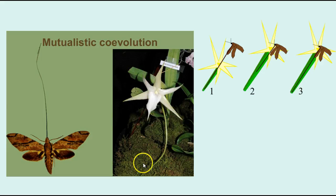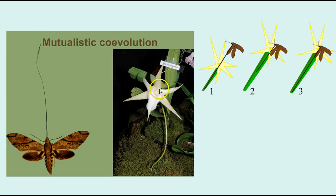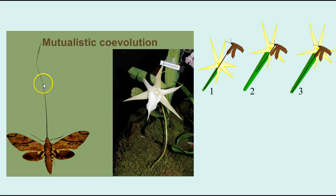Coevolution is when two species adapt to each other over time. Here we have an example: a type of moth with a very long proboscis — its feeding part — because it feeds on a particular flower and what it needs to feed on is deep inside. Over time, as the flower's tube to get to the nectar increased in length, the pollinator's proboscis also increased in length in order to feed on that flower. They changed in response to changes in each other, and that's called coevolution. You see it often in insects and flowers, but there are other examples as well.